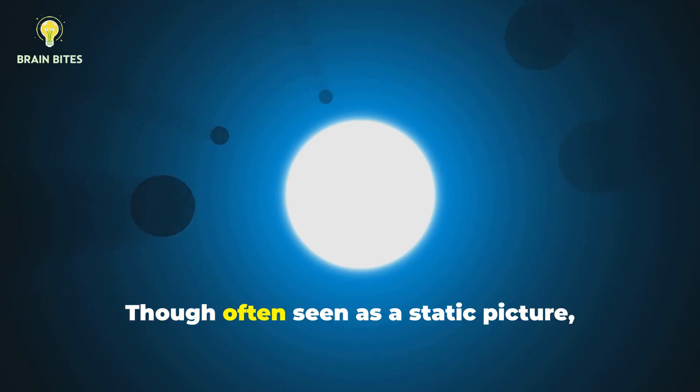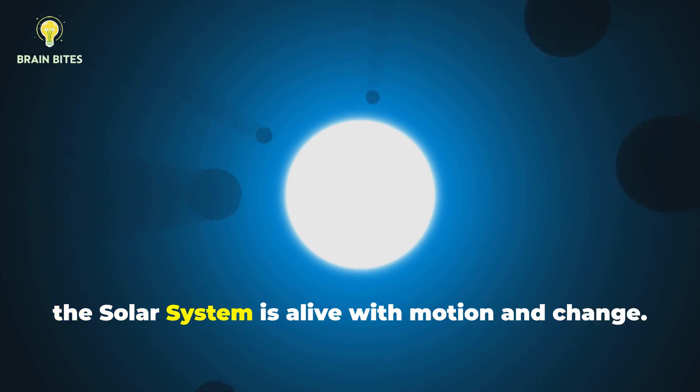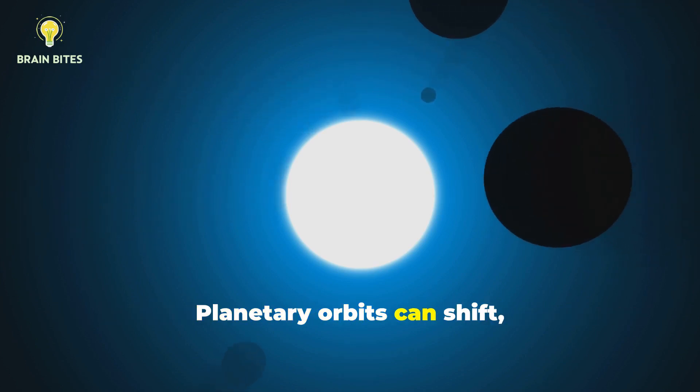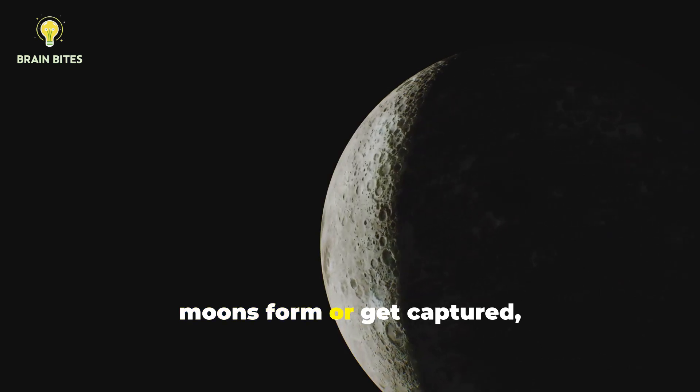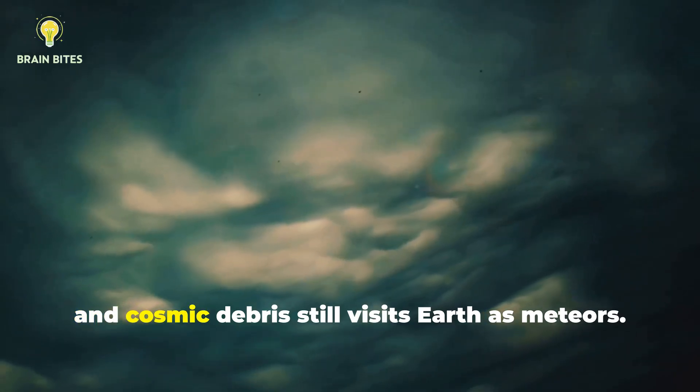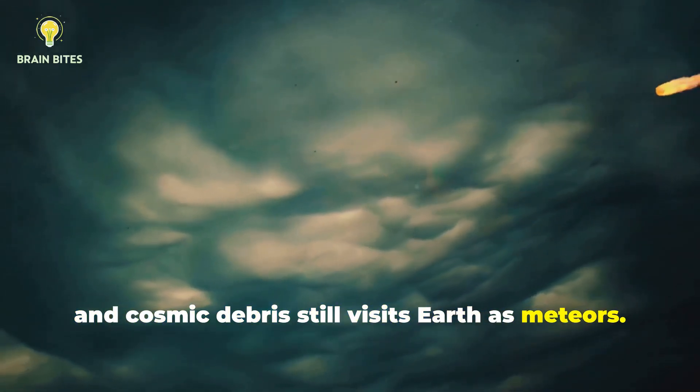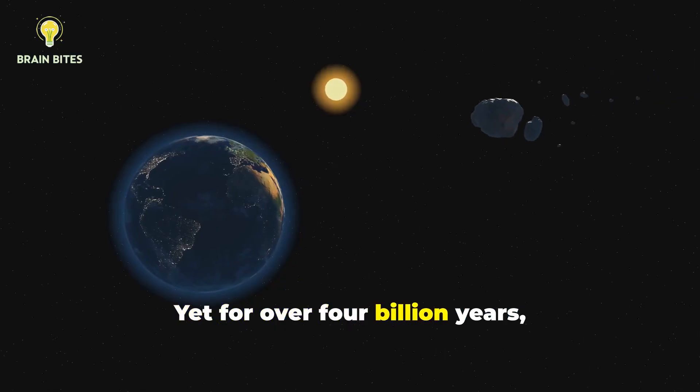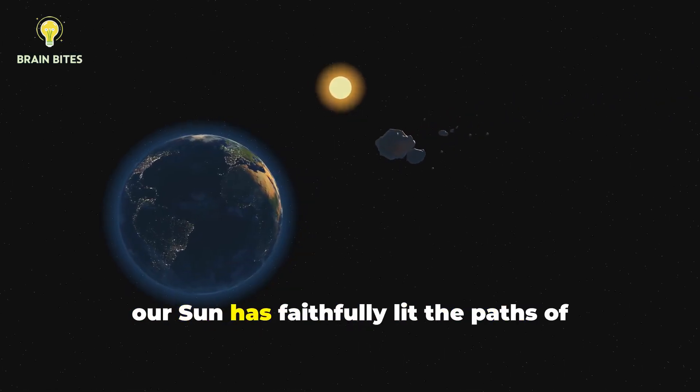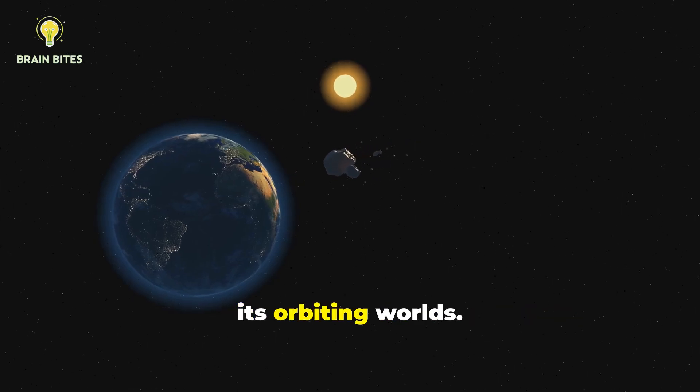Though often seen as a static picture, the solar system is alive with motion and change. Planetary orbits can shift, moons form or get captured, and cosmic debris still visits Earth as meteors. Yet for over four billion years, our Sun has faithfully lit the paths of its orbiting worlds.